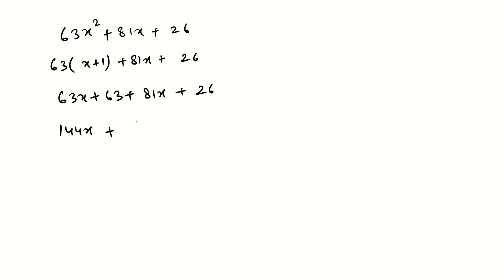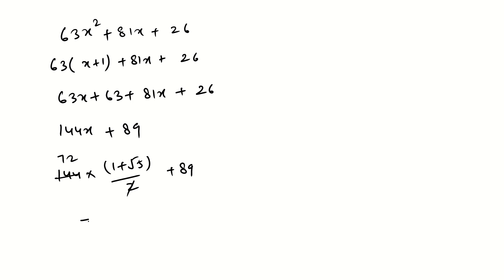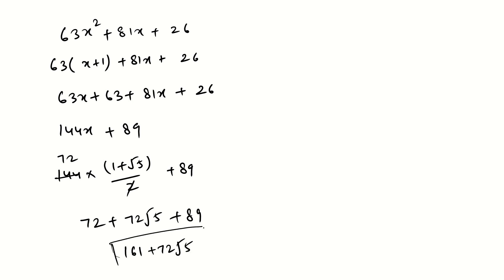Now substitute x = (1 + √5)/2: 144 × (1 + √5)/2 + 89 = 72(1 + √5) + 89 = 72 + 72√5 + 89 = 161 + 72√5. So this is our solution. Please like, share, and subscribe to my channel. Thank you!